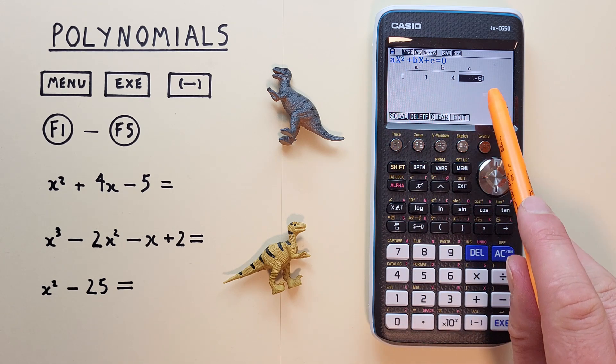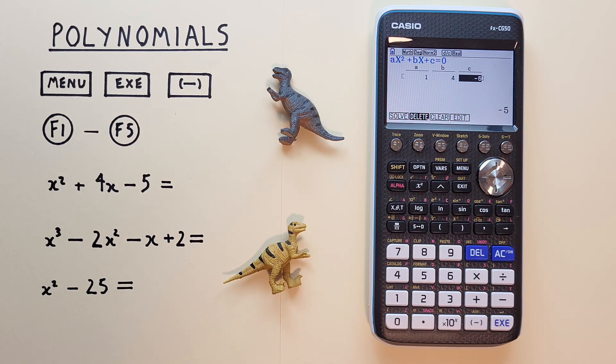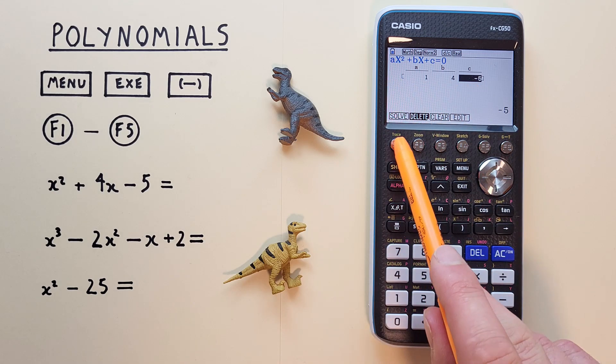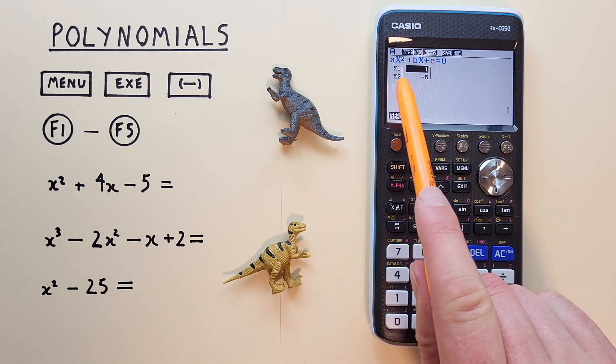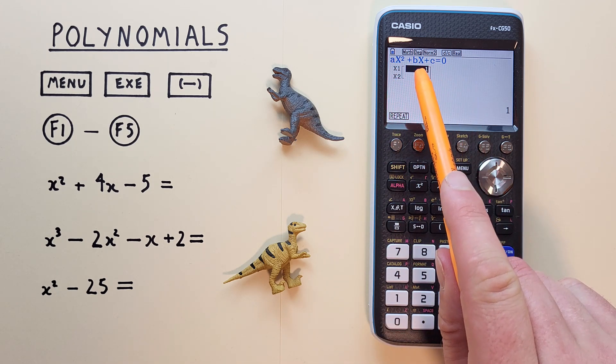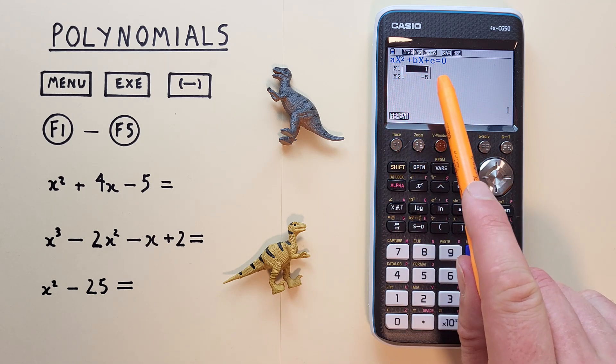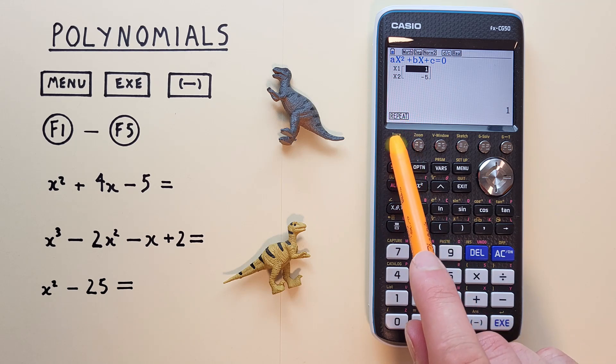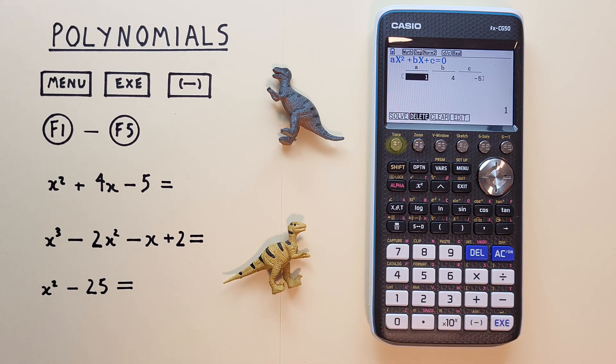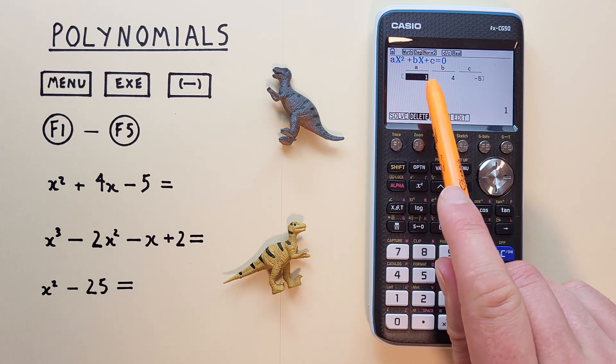There we go. We've got our equation entered. And now we can hit solve f1. And see, this gives us the results of x equals 1, or x equals minus 5. If we're done with that, we can go back by hitting f1 or repeat. And then we can edit our equation here if we want to.